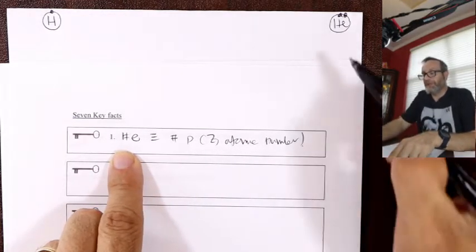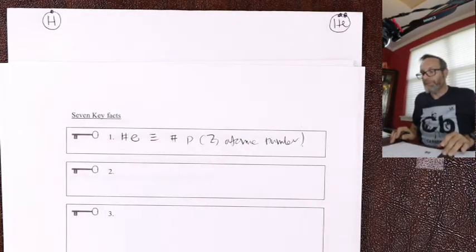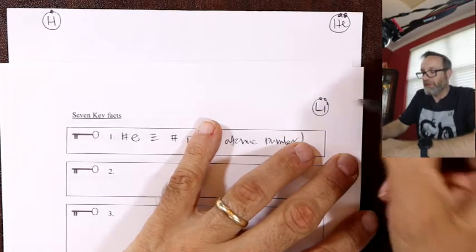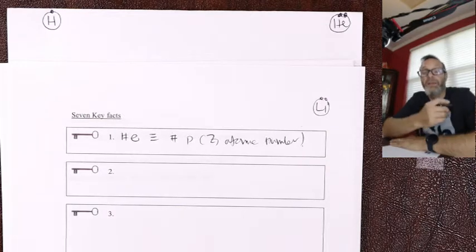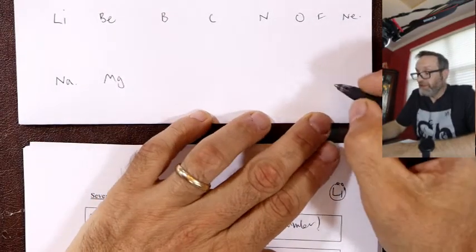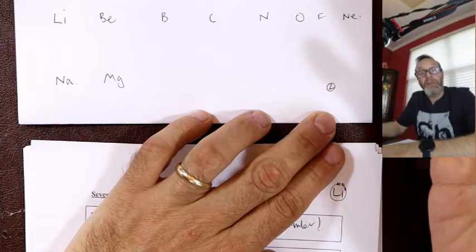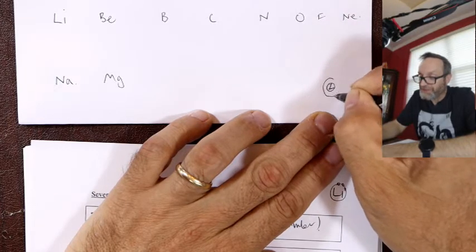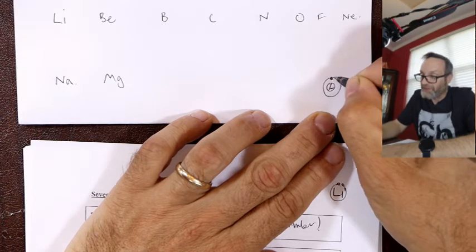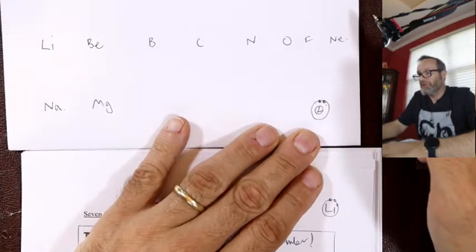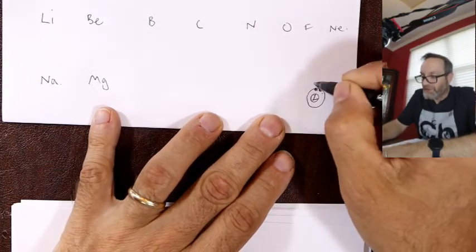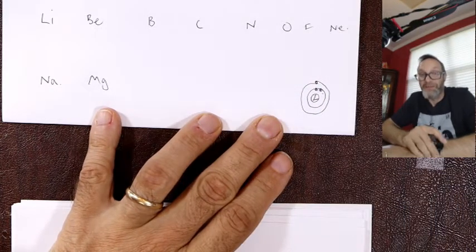Think about Wrigley Field. Here's the diamond, here's the stadium. If you're a VIP — a player, a manager, someone important — you can park right next to the stadium in that first ring or layer of parking. But there's only room for a few people. Same with atoms: the closer you are to the nucleus or the stadium, the less room there is. In an atom, there's only room for two electrons in that first layer — all the VIP spots are taken. Then you've got to go to the next layer of parking.